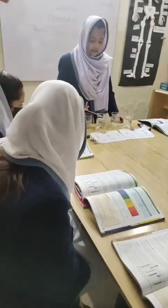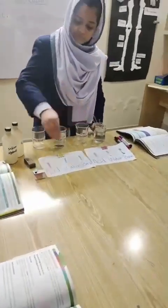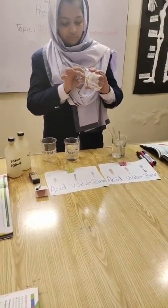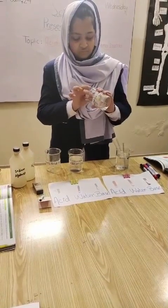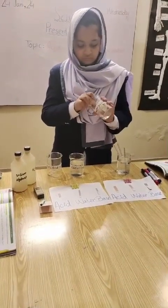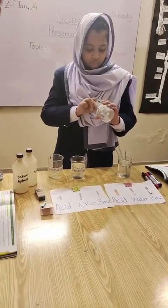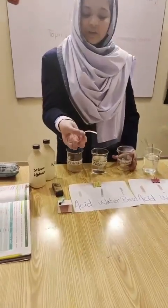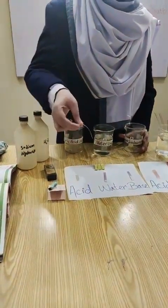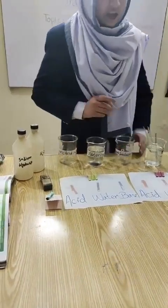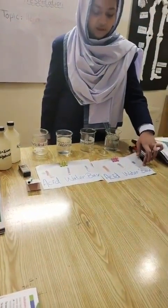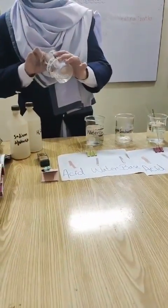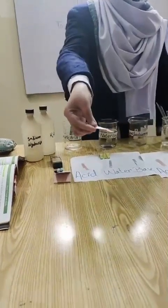Now we have acid, and if we add base then the color changes. This color has changed — it is dark. Red litmus turns blue. Now you can see this color is neutralized and has changed.